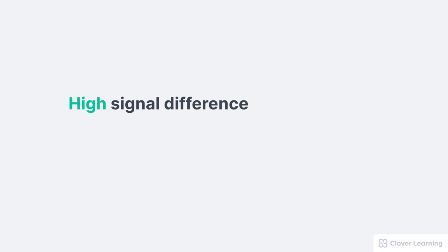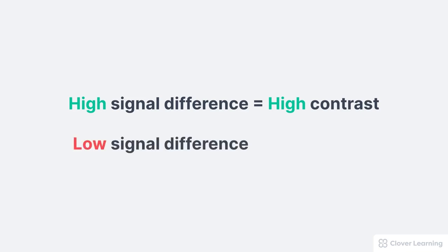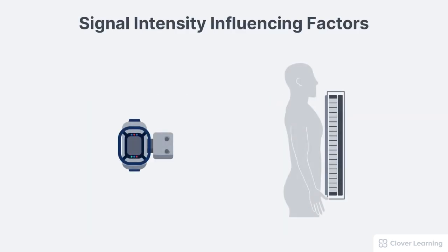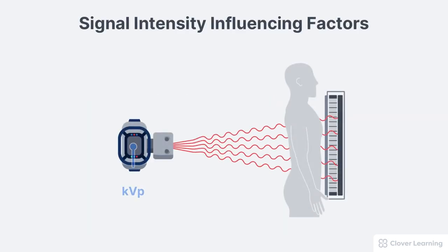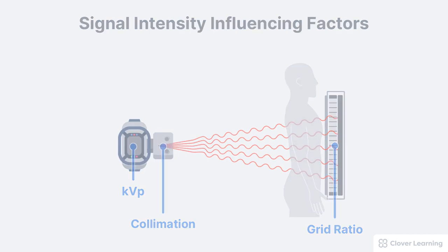Different signal intensities from different structures become different brightness levels in the image. High signal difference — that's a high level of differential attenuation — becomes high contrast in the image. A low signal difference — that's a low level of differential attenuation — becomes low image contrast. KVP, grids, and collimation all influence the difference in signal intensity striking the image receptor, but in different ways.